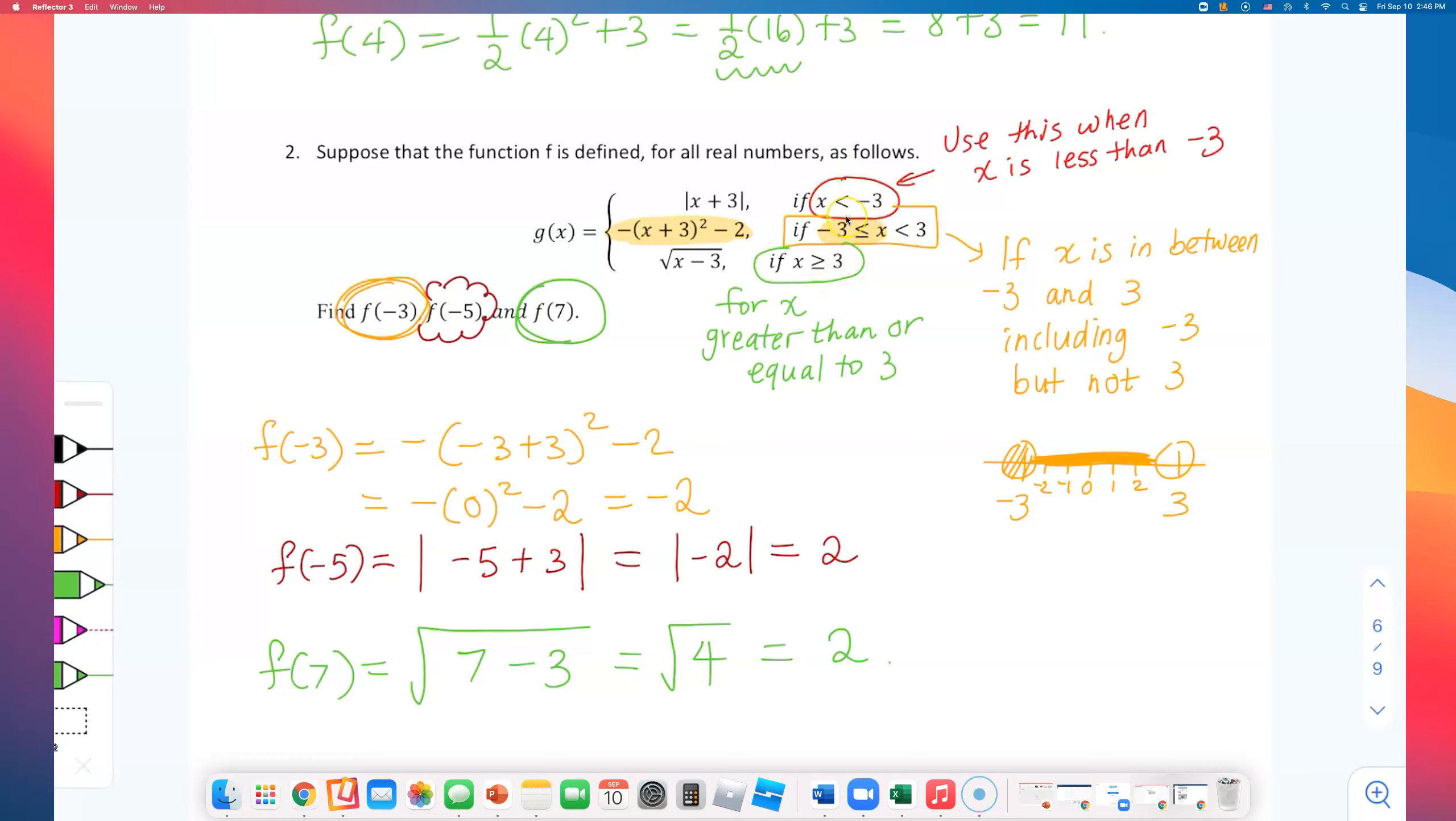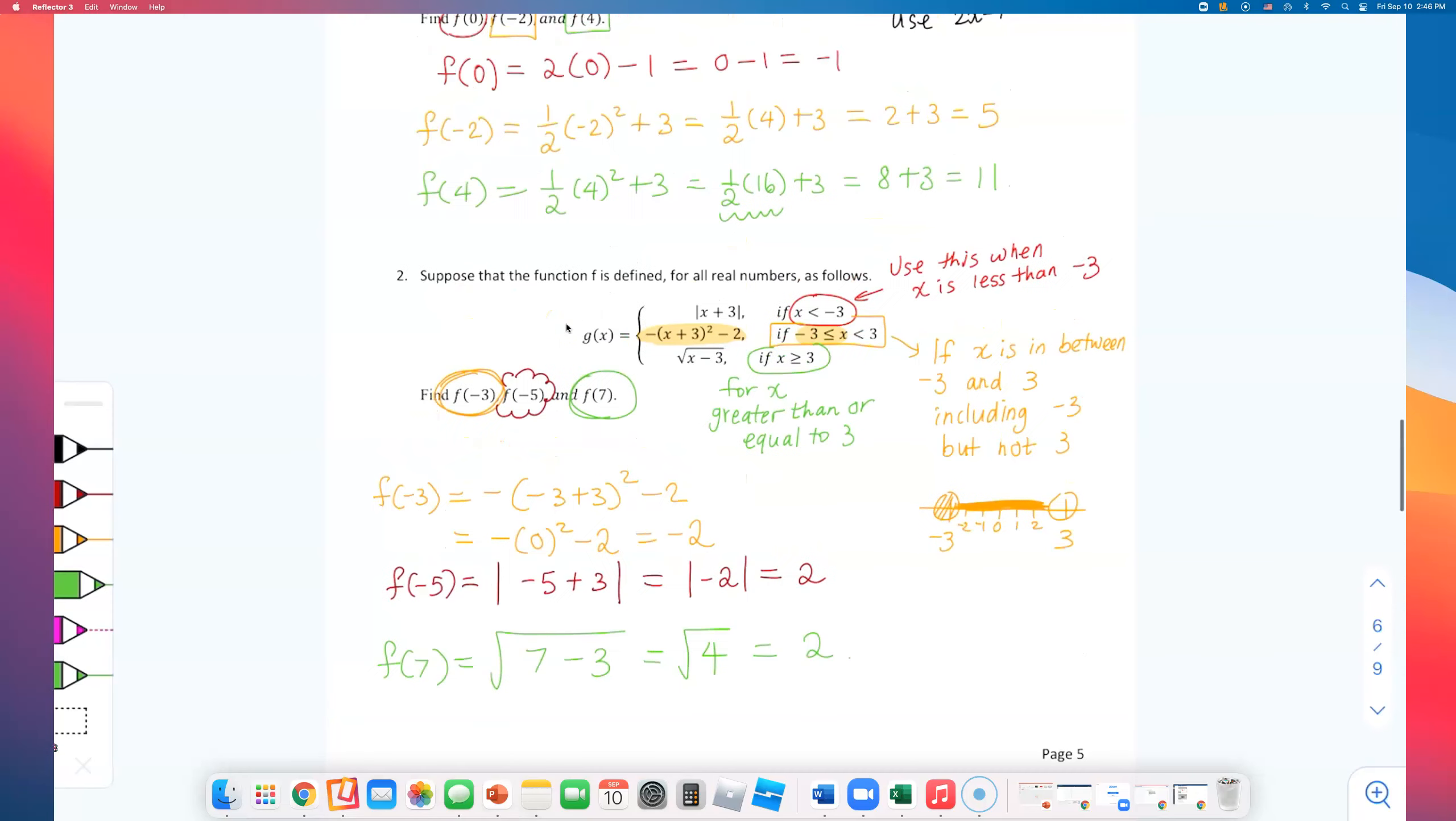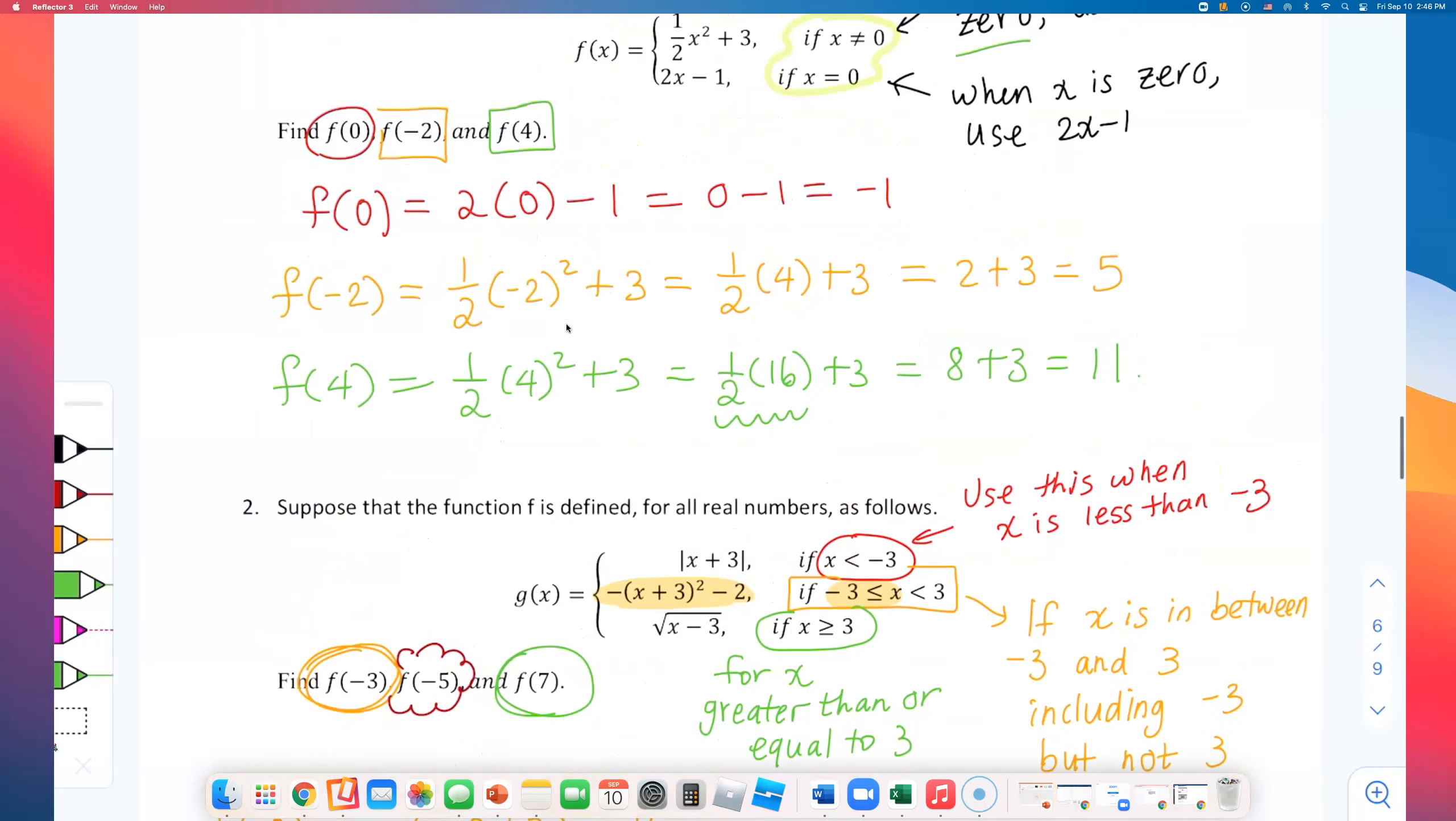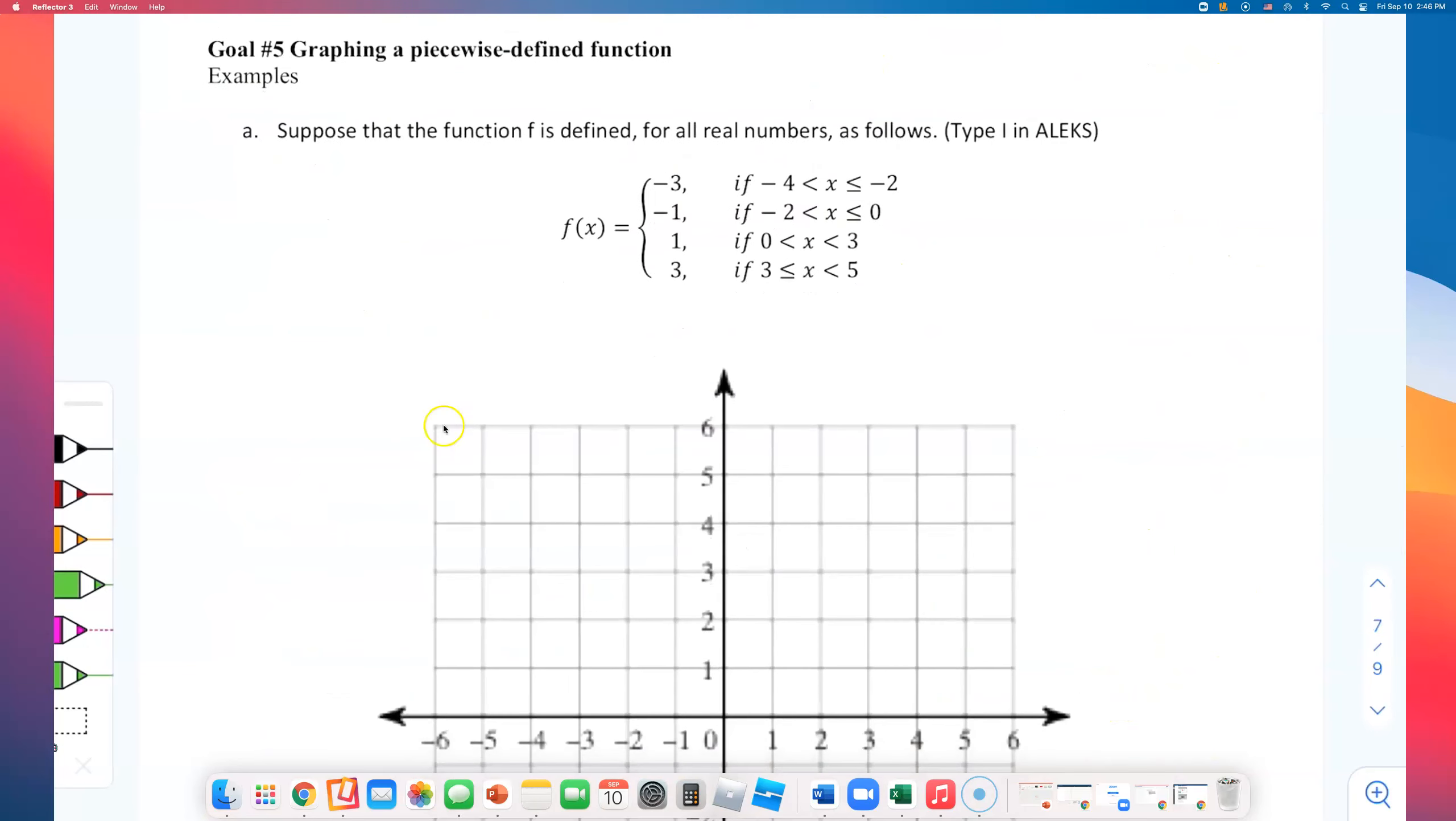So by carefully looking at the domain, depending on the size of the x value they give us, negative 3, negative 5, or 7, we have to decide which piece to plug in these x values. You're going to have similar problems for your homework. And I do remember they ask you for three different functions, the values to be evaluated. So try those because that is important. We need to know how to do that before we can graph some of these piecewise functions.